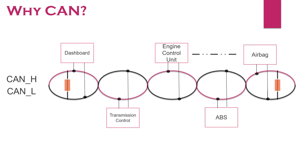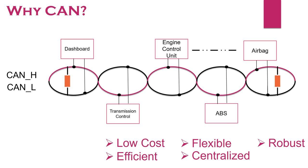To overcome this issue, CAN was introduced as a centralized solution which requires only two wires — CAN High and CAN Low. This solution is quite efficient due to its message prioritization and flexible, as a node can be inserted or removed without affecting the network.